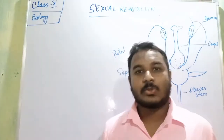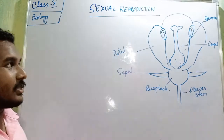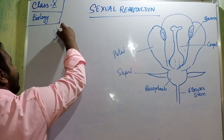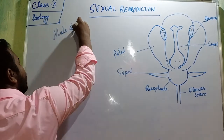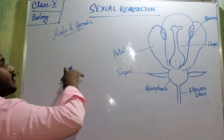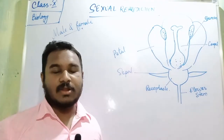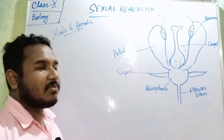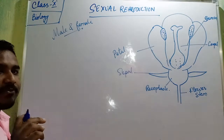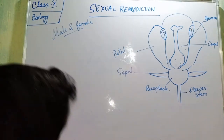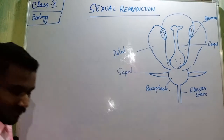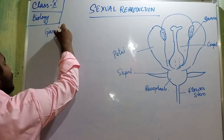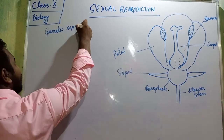Now we will talk about sexual reproduction. Sex means gender — male and female. So sexual reproduction needs a male and a female. A male gamete, the male sex cell, and a female gamete, the female sex cell, both join together to form a zygote. These sex cells are called gametes.